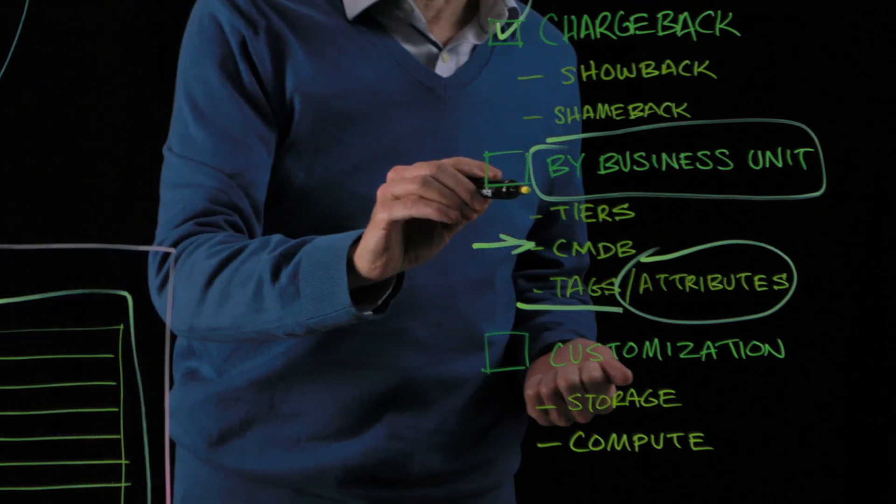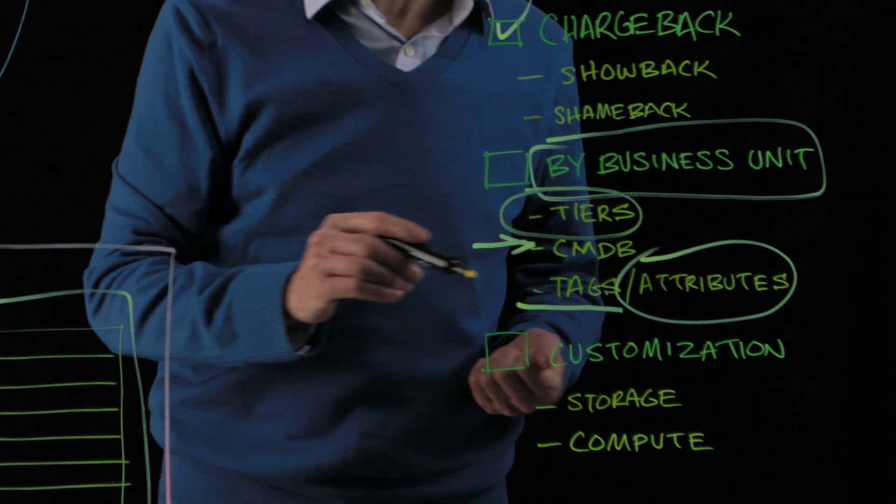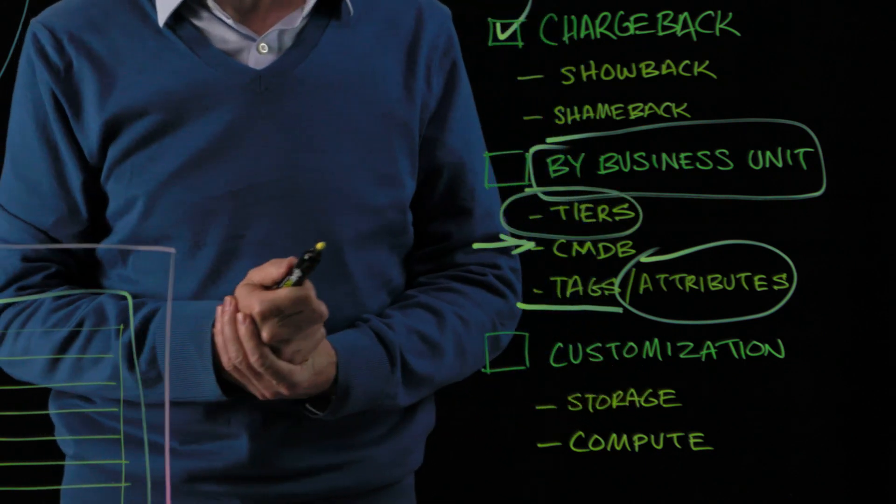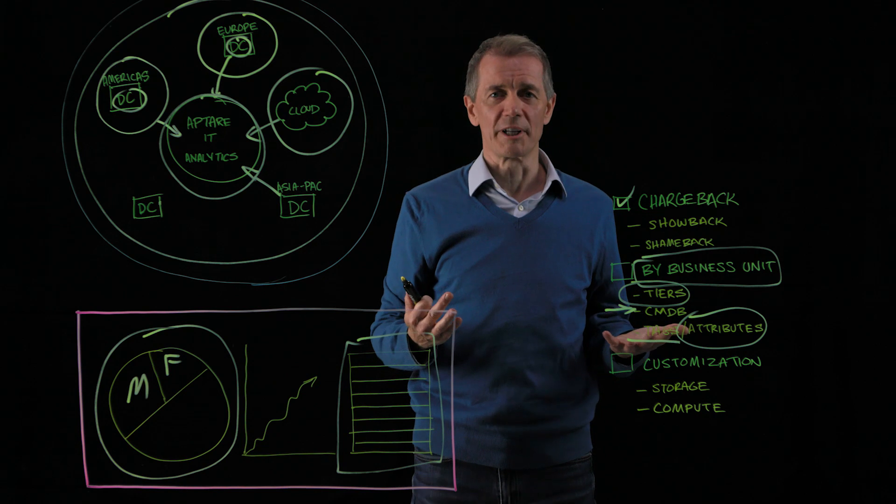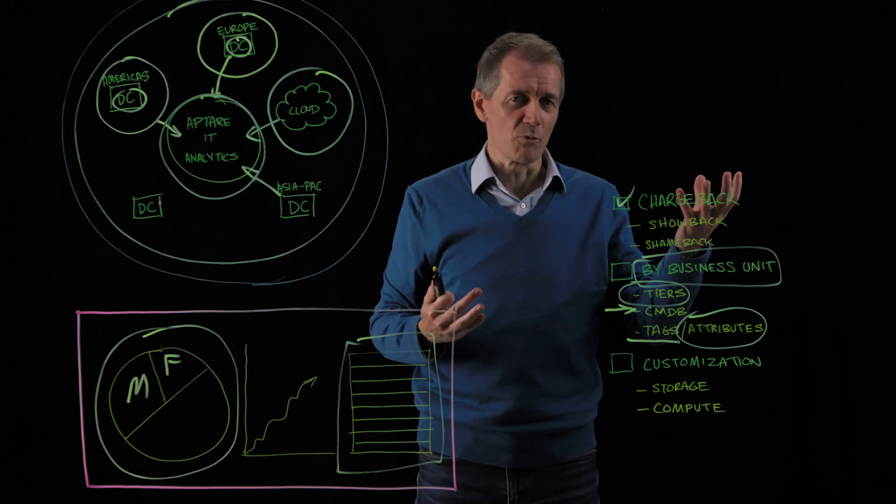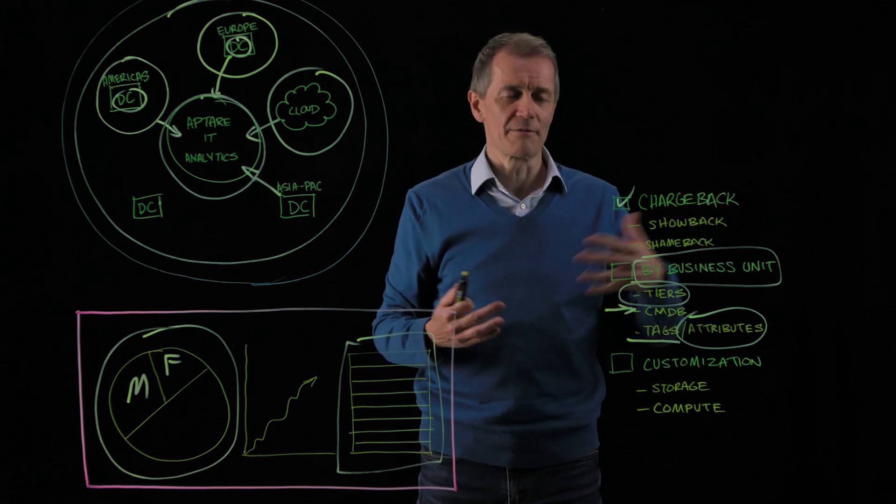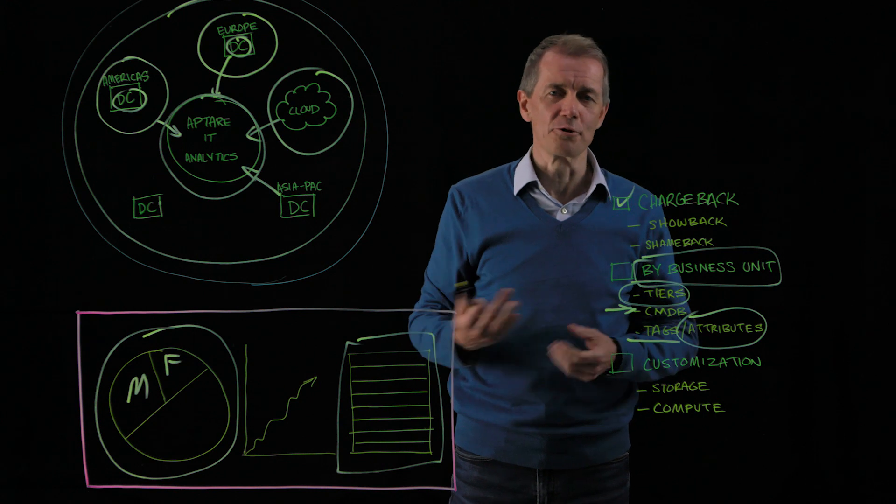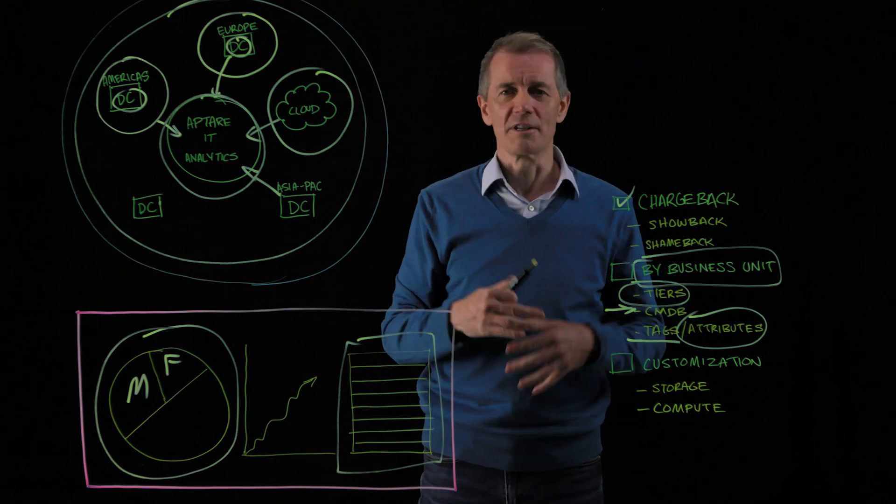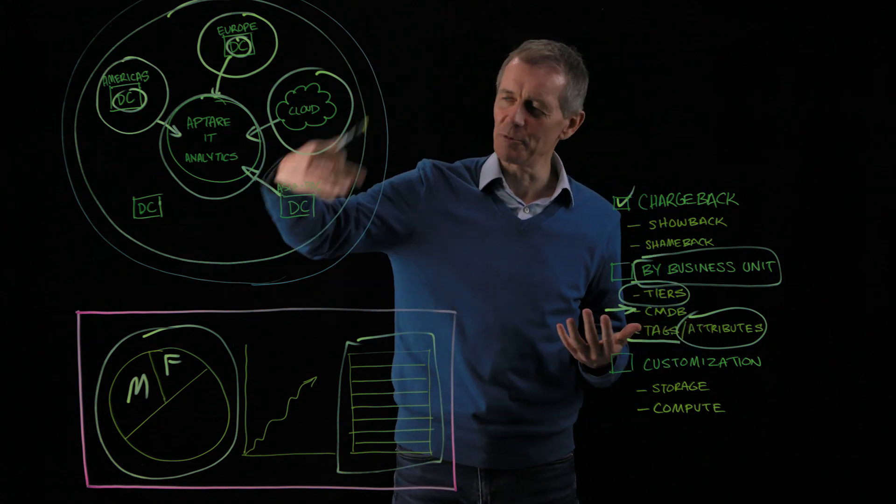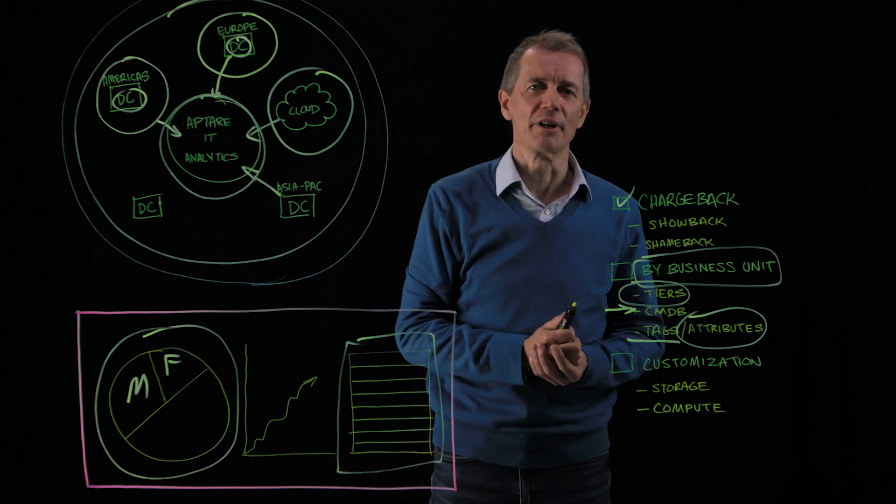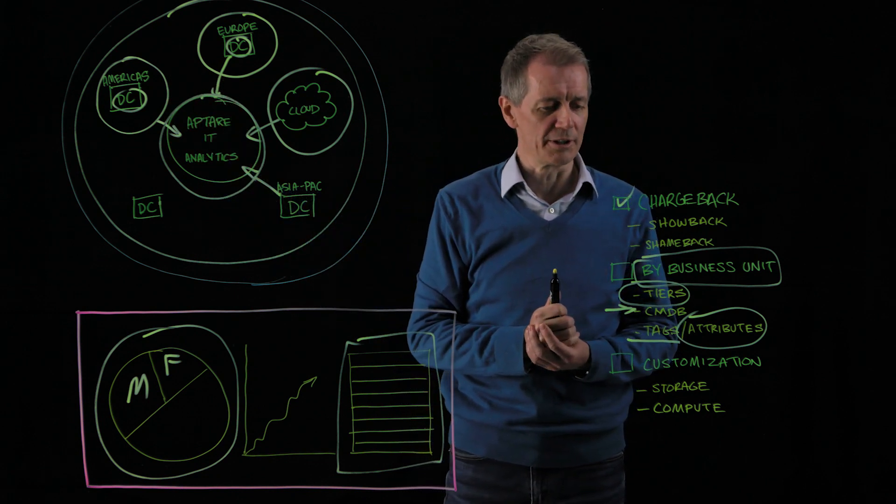Within this reporting as well, typically the consumers want to be able to see the tiers of storage that they're utilizing. And by tiers, what I mean is flash is the most expensive, it's the fastest, that's typically tier one. Tier two might be more traditional storage. Is it being deduped or not? We capture all of that information and we can fold that back into the chargeback reporting.